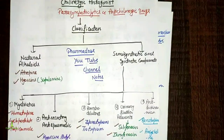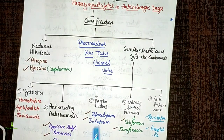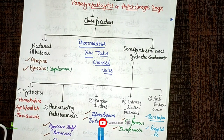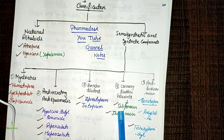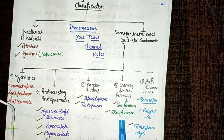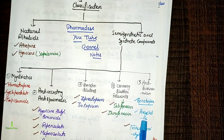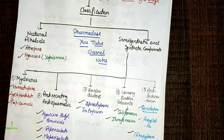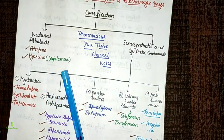Pirenzepine is a selective M1 antagonist. Isopropamide also falls in this category. Bronchodilator drugs are ipratropium bromide and tiotropium bromide. Bladder relaxants include solifenacin, darifenacin, and tolterodine — these are M3 antagonists. Anti-Parkinson drugs include benztropine, procyclidine, and trihexyphenidyl.